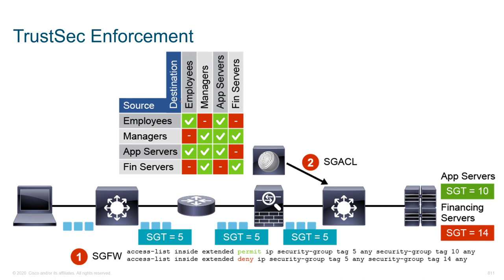Looking at TrustSec enforcement, we read the matrix with sources on the left and destination security groups across the top. We find the cell at their intersection, and that cell indicates our rules — the security group ACL is applied right at that junction. From a CLI perspective, this looks like: access-list inside extended permit IP security-group tag 5 any to security-group tag 10 any.